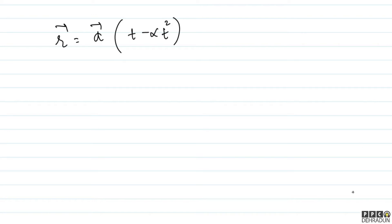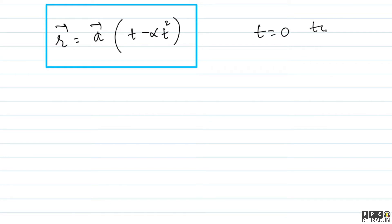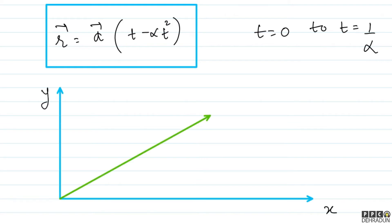Now we also need to find how much distance was traveled in this time interval. The given r vector is a vector multiplied by (t minus alpha t squared), and we need the distance from t equals 0 to t equals 1 by alpha. Let's analyze the motion. At t equals 0, r vector was 0, and at t equals 1 by alpha, r vector becomes 0 again.